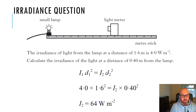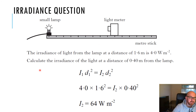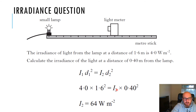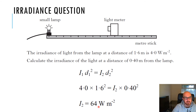Here's a past paper question: the irradiance of light from a lamp at a distance of 1.6 metres is 4 watts per meter squared. Calculate the irradiance at a distance of 0.4 metres from the lamp. Start with the formula I₁d₁² = I₂d₂² — one mark for that — plug in the numbers, rearrange for I₂, and calculate: the answer is 64 watts per meter squared. It's simply using the formula, plugging in the values, and including correct units.